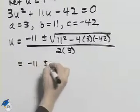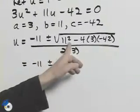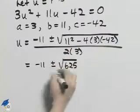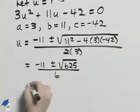Simplifying this, if you evaluate what's underneath the radical, you will get 625. That's all over 6.